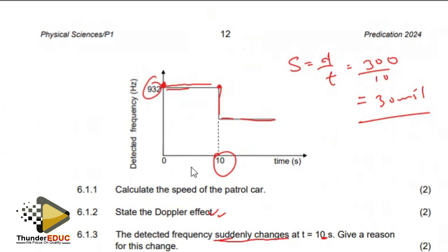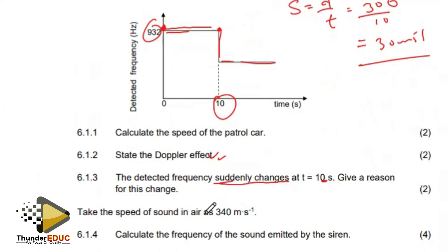If the car just comes and it's making a lot of noise, then immediately passes you, definitely there's going to be a change. So we could say that the car just passes the listener or observer.